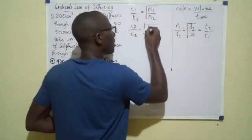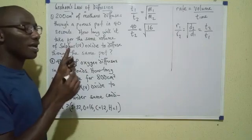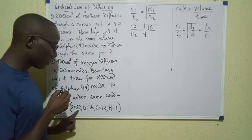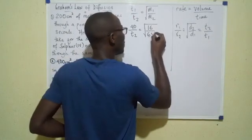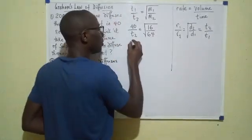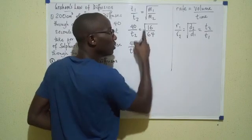Methane has a mass of 16 because methane is CH4. C is 12, H4 is 1 times 4, that's 4, so we have 16. And the other gas is sulfur(IV) oxide, SO2. S is 32, so that gives us 64.